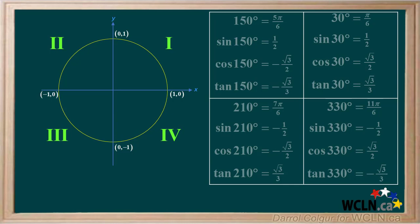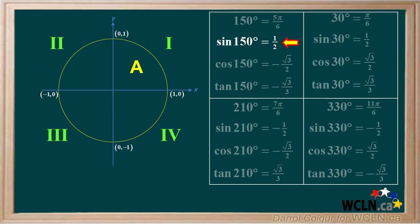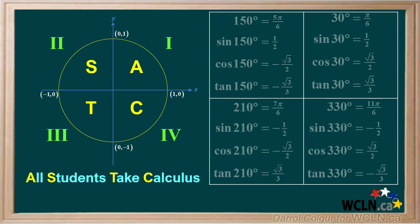We'll number the quadrants as 1, 2, 3, and 4, starting at 1 and moving counterclockwise around the circle. In quadrant 1, the sine, cosine, and tangent are all positive, so we'll write an A here for all. In quadrant 2, only the sine is positive, so we'll write an S for sine. In quadrant 3, only the tangent is positive, so we'll write a T for tangent. In quadrant 4, only the cosine is positive, so we'll write a C for cosine. Moving from quadrant 1 to quadrant 4, the letters are A, S, T, and C. We can remember this using the sentence: All students take calculus.